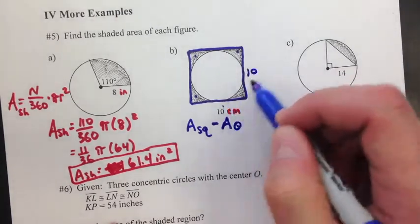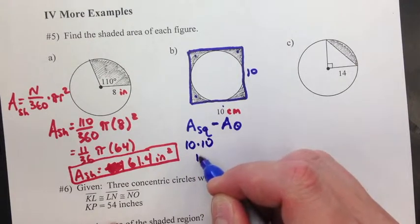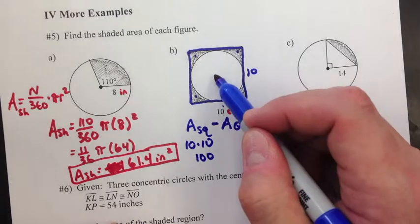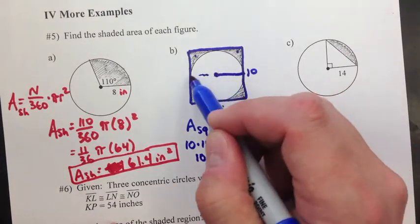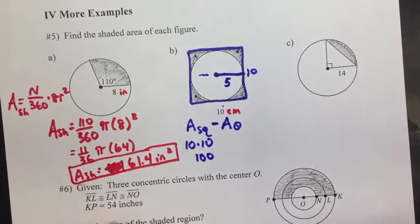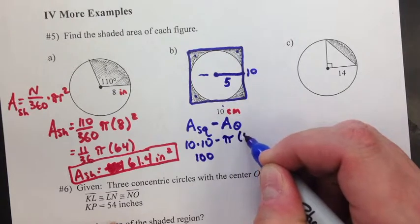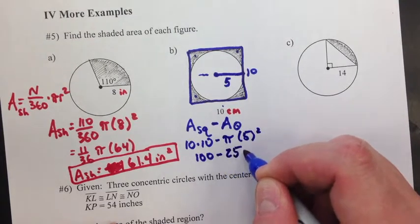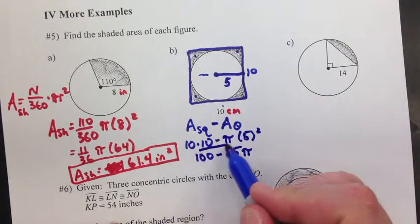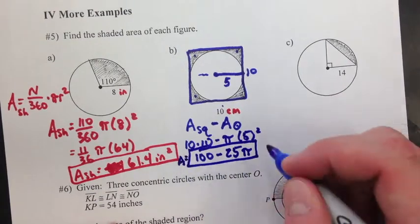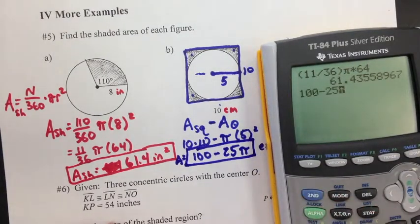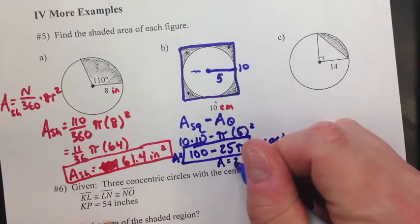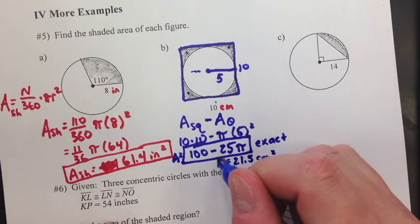So the area of a square is 10 times 10, which is 100. The area of the circle is pi times radius squared. It's 10 all the way across for the square. That means it's 10 for the diameter. So the radius would just be 5. So minus pi times r squared, which is 25 pi. Now, this is the exact answer. That is exact.